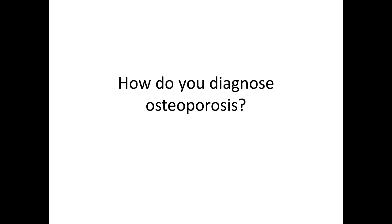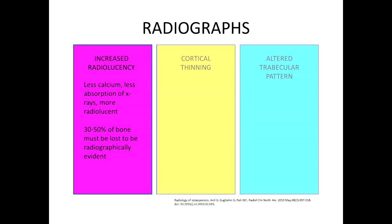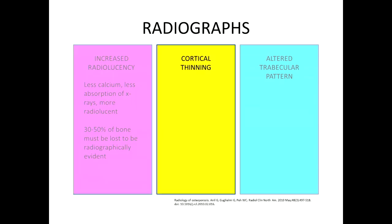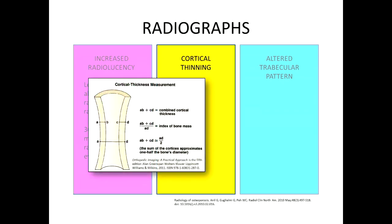So how do we diagnose osteoporosis? Once upon a time, plain films were used. Osteoporotic bone has less calcium and therefore absorbs less X-rays, causing them to appear more radiolucent. However, this is not a very sensitive finding, as nearly 50% of the bone must be lost for the bone to appear this way. The thickness of the cortex will also diminish with osteoporosis, and measurements of cortical thickness have been used to diagnose osteoporosis.